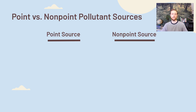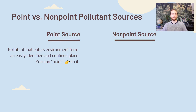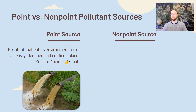Point sources of pollution are sources that can be easily identified or easily pointed to. The EPA defines them as pollutants entering the environment from an easily identified and confined place. I like to think of actually being able to point to the source of these pollutants entering the environment.